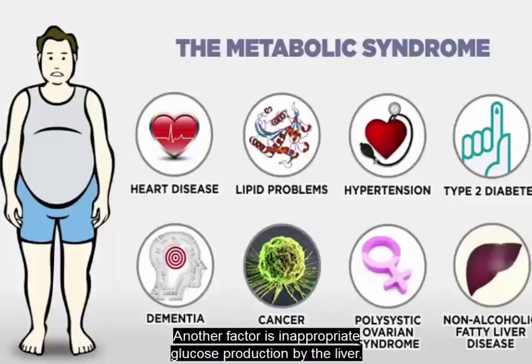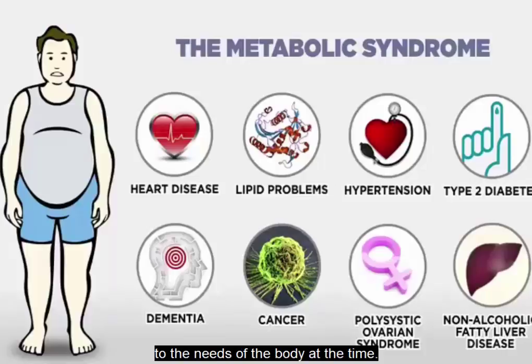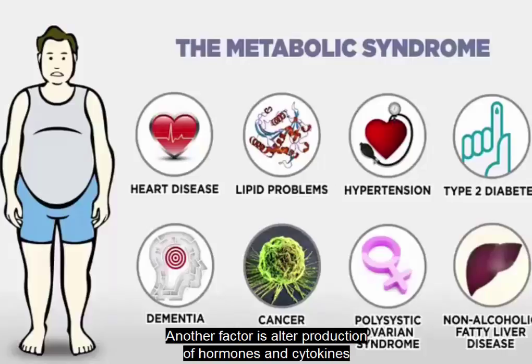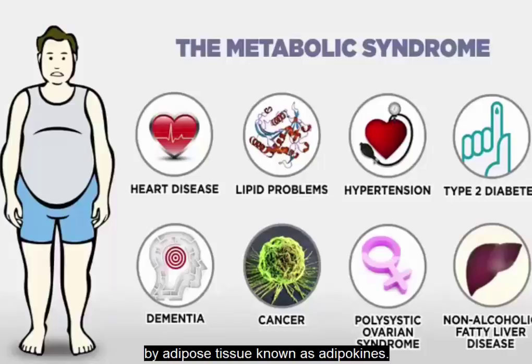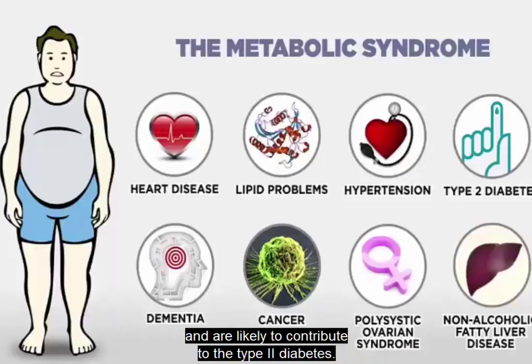Another factor is inappropriate glucose production by the liver. Instead of properly regulating the release of glucose in response to blood levels, the liver does so in a haphazard way that doesn't correspond to the needs of the body. Another factor is altered production of hormones and cytokines by adipose tissue, known as adipokines. These are secreted by adipose tissue and appear to play a role in glucose and fat metabolism, and are likely to contribute to type 2 diabetes.